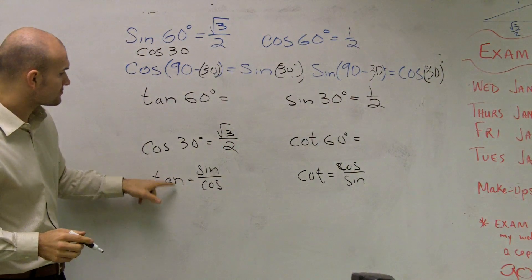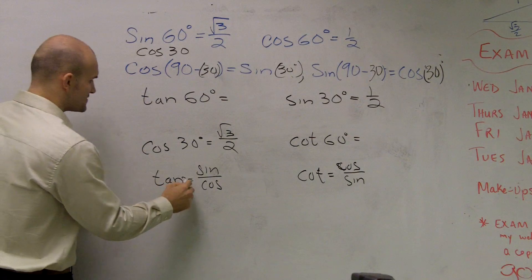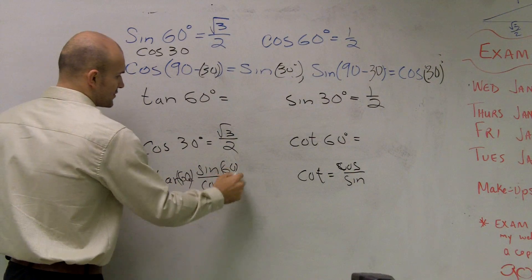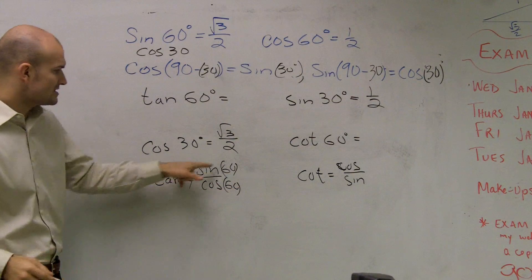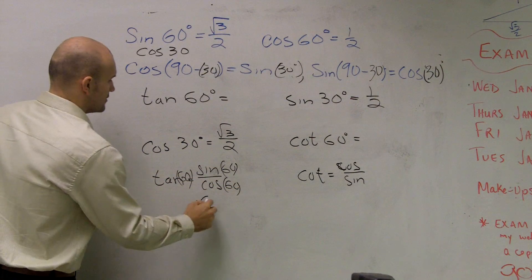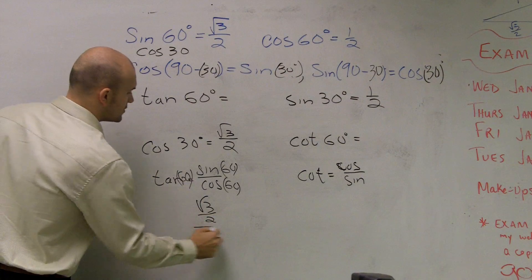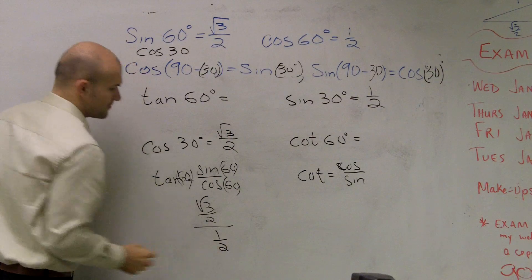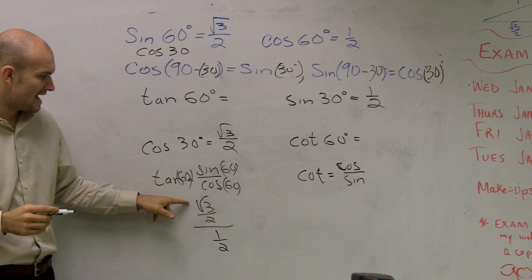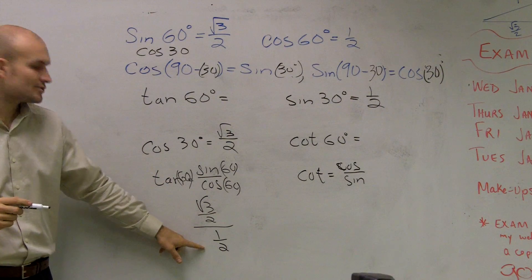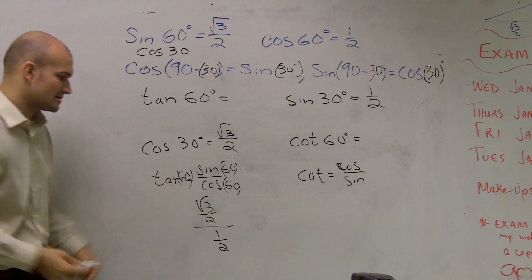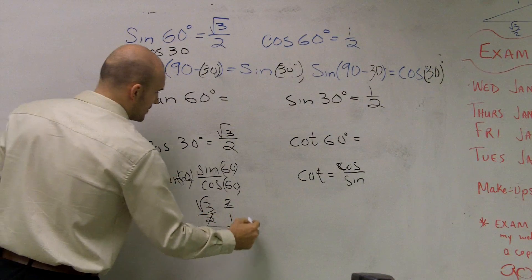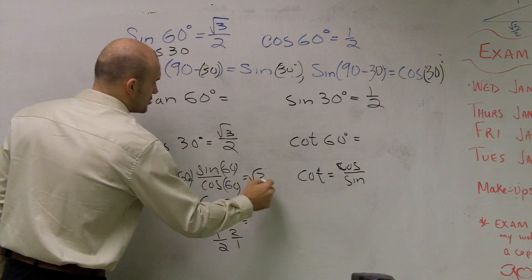So I know the sine. So if I want to find the tangent of 60, then that's going to be the sine of 60 degrees over the cosine of 60 degrees. Well, what's the sine of 60 degrees? Square root of 3 over 2 divided by the cosine of 60 degrees, which is 1 half. So that sine of 60 degrees over the cosine of 60 degrees equals the tangent of 60 degrees. Well, I multiply by my reciprocal. Now those cancel out and I'm left with the square root of 3.